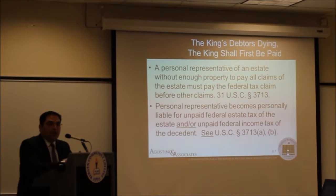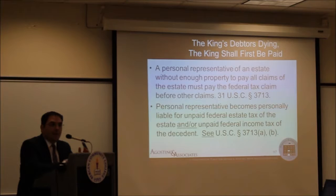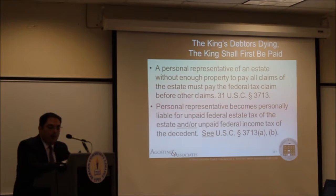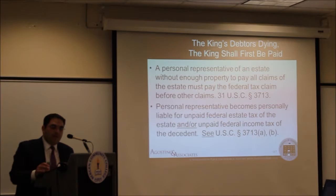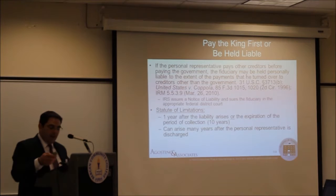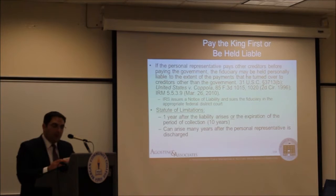Let's talk about the personal liability that can befall a personal representative of the estate. A provision that followed from the Magna Carta can be found in 31 U.S.C. Section 3713. The Magna Carta principle that a king's debtor dying means the king shall first be paid is essentially the principle in Section 3713. A personal representative of an estate without enough property to pay all claims must pay the federal tax plan before any other claims. Personal representatives who do not pay federal claims first become personally liable for any unpaid federal estate tax or federal income tax liabilities of the decedent.